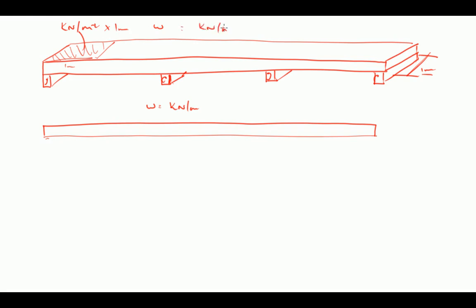We're going to idealize this structure by saying it has pin supports because they cannot apply any external moment because they won't take torsions. We could say that was a fixed pin and these are rolled pins to make sure that there are no horizontal forces generated.